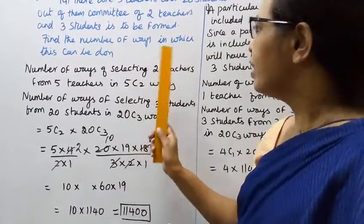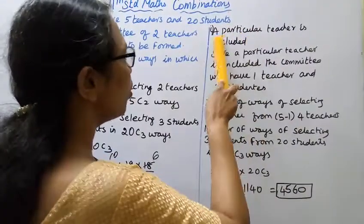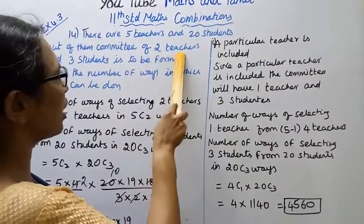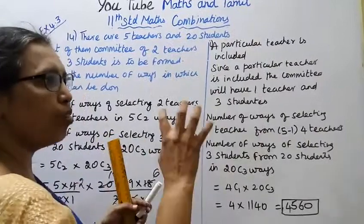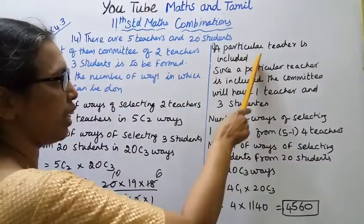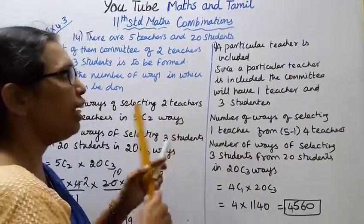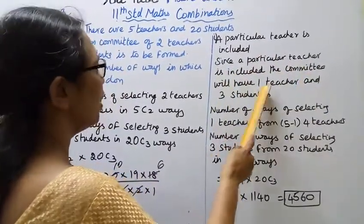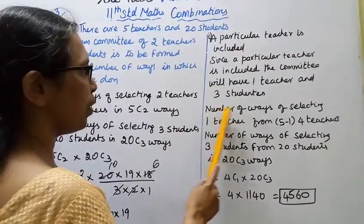Now for the next part: a particular teacher is included in the committee. This committee will still have 2 teachers and 3 students. Since one particular teacher is already included, the committee will have 1 more teacher and 3 students.